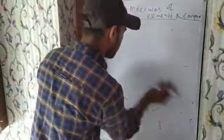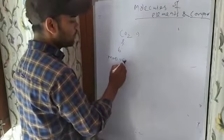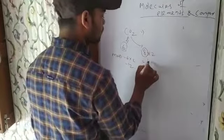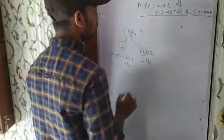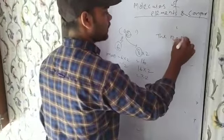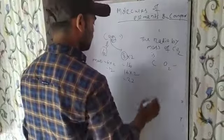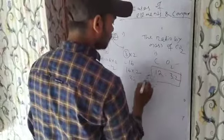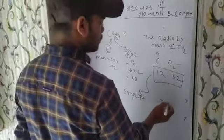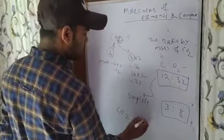Like in carbon dioxide — carbon has atomic number 6, and its mass number is 6 multiplied by 2, which is 12. Oxygen has atomic number 8, and 8 multiplied by 2 is 16. Oxygen is present 2 times, so 16 multiplied by 2 equals 32. So the ratio by mass of carbon dioxide — carbon to oxygen — is 12 to 32. The simplest ratio is 3 to 8. So the simplest ratio of carbon dioxide is 3 to 8.